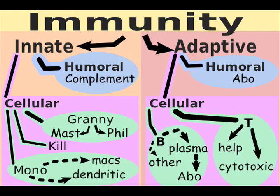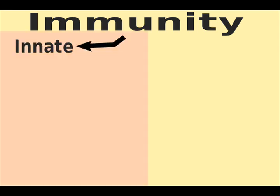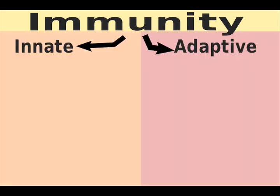If you can draw this diagram, you understand a scientific organization of immunity. Immunity is either innate or adaptive.